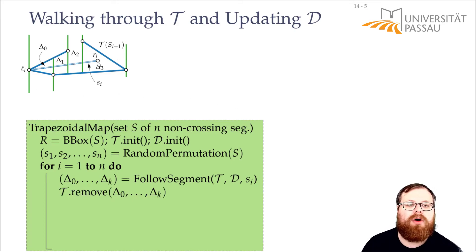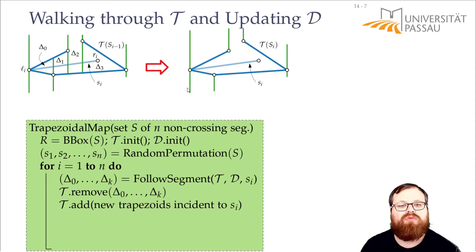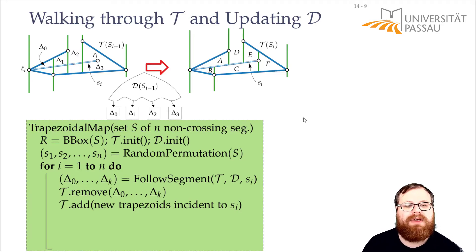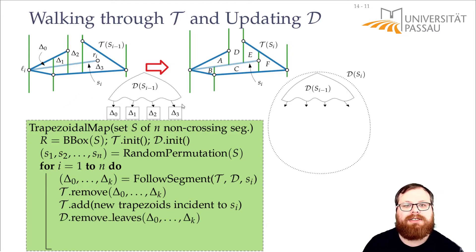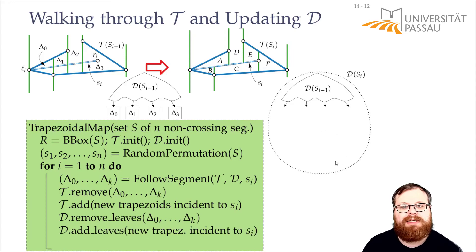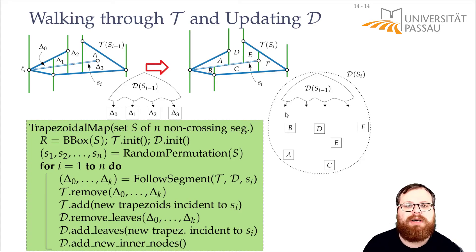Then we remove them all from our trapezoidal map. And then we build the new trapezoids that are all incident to Si. So these are the new ones here. And then we update the data structure. We remove again these trapezoids. We add the new trapezoids as leaves. And then we add the interior nodes that we need to do the routing.